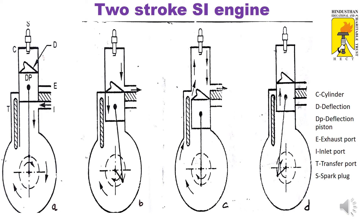The piston moves downward — this is the working stroke. As the piston moves downward, the inlet port is covered. The air-fuel mixture previously entered into the bottom of the casing is now compressed there since the transfer port and inlet port are both closed. Then the piston uncovers the exhaust port and the hot gas is exposed to atmosphere. This is the second stage of the piston position.